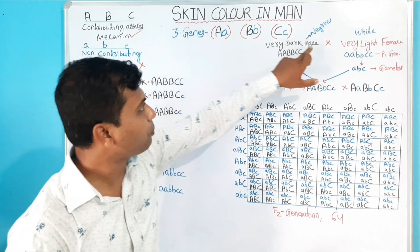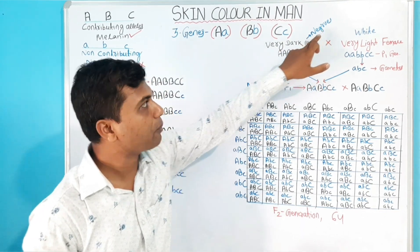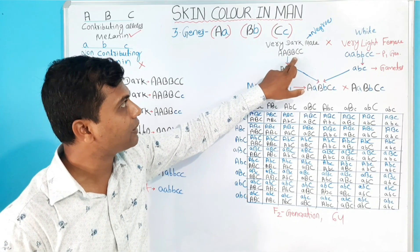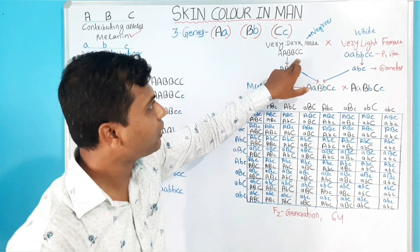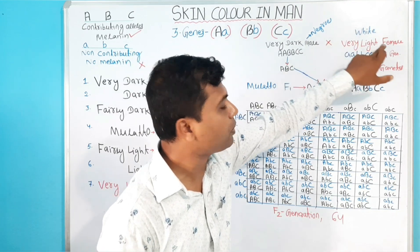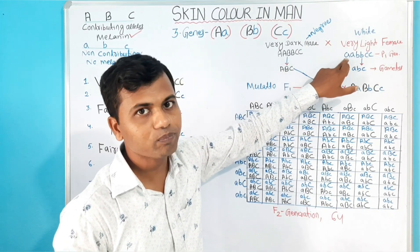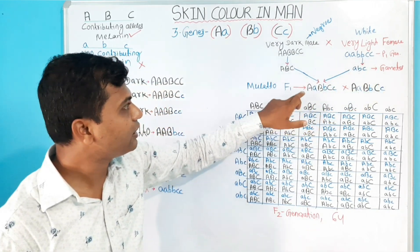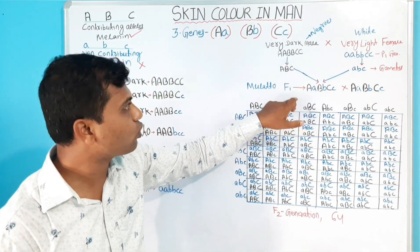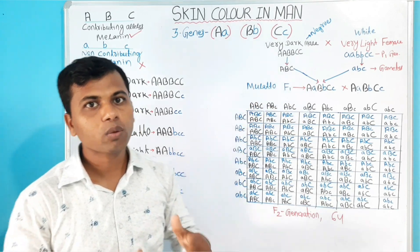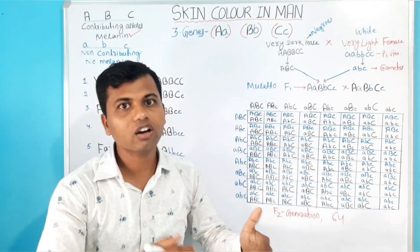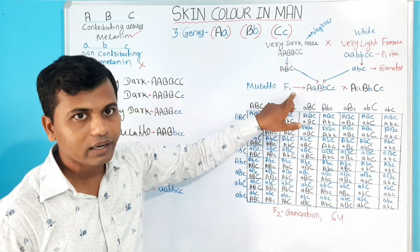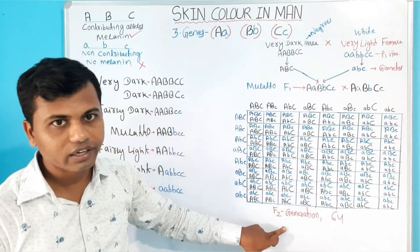When a very dark male (negro) having genotype AABBCC marries a very light (white) female having genotype aabbcc, the F1 individuals produced show a mulatto phenotype. Mulatto means neither black nor fair. When these mulatto F1 individuals interbreed, they produce the F2 generation.